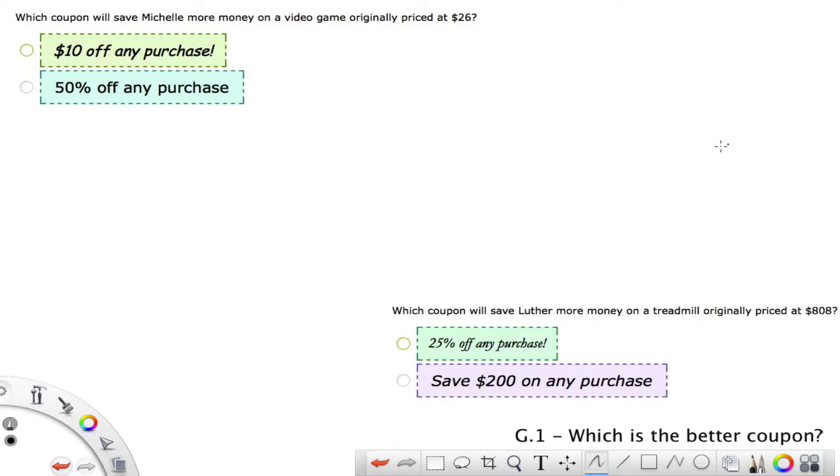This is G1 from grade 6, and it's asking which is the better coupon? Essentially what's happening is we are going to do some percentages. So as you look through this, make sure you understand your percentages. The first one is $10 off or 50% off, so we have $26 on this video game. We need to find 50% of 26, so that means we're going to multiply.